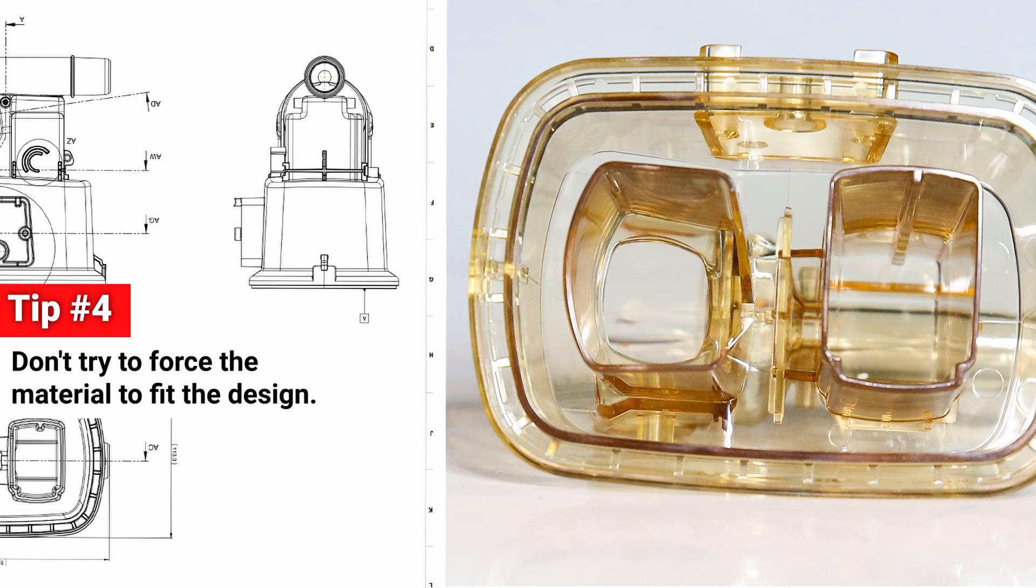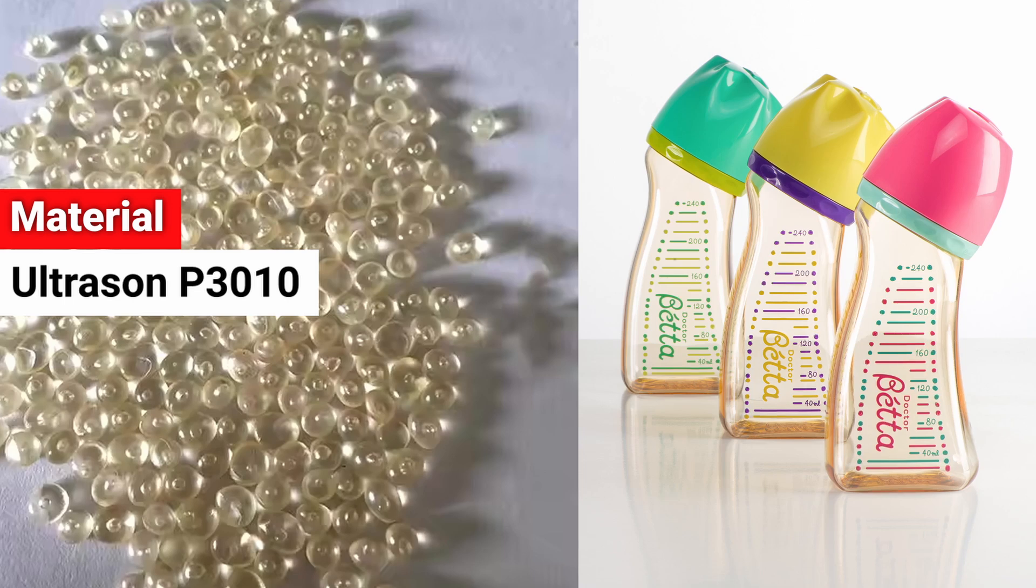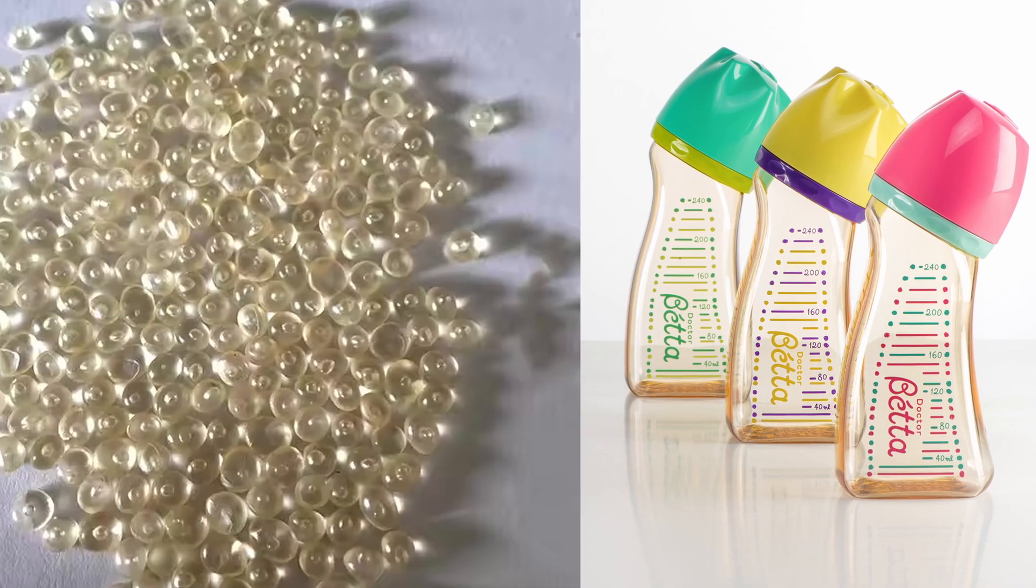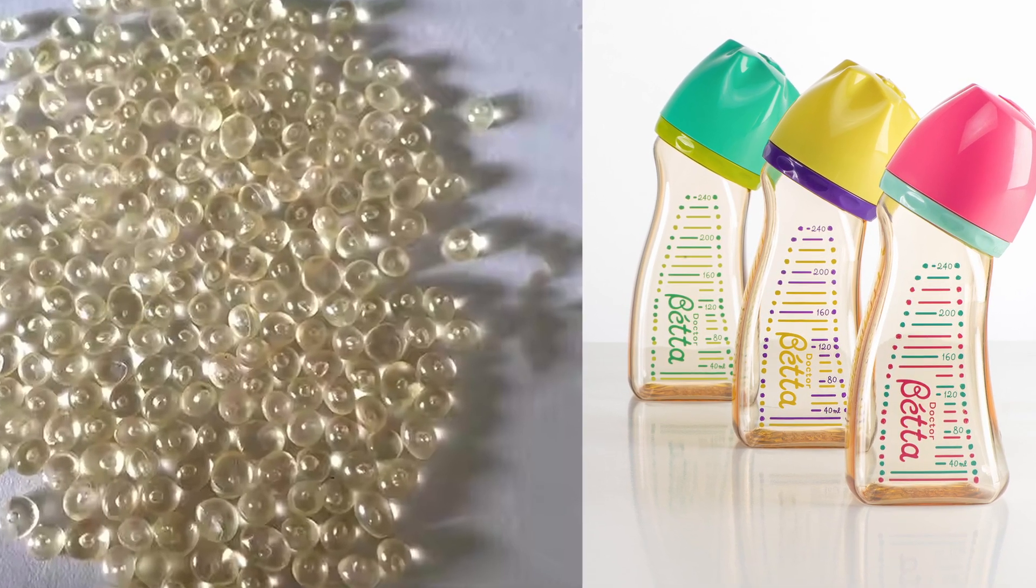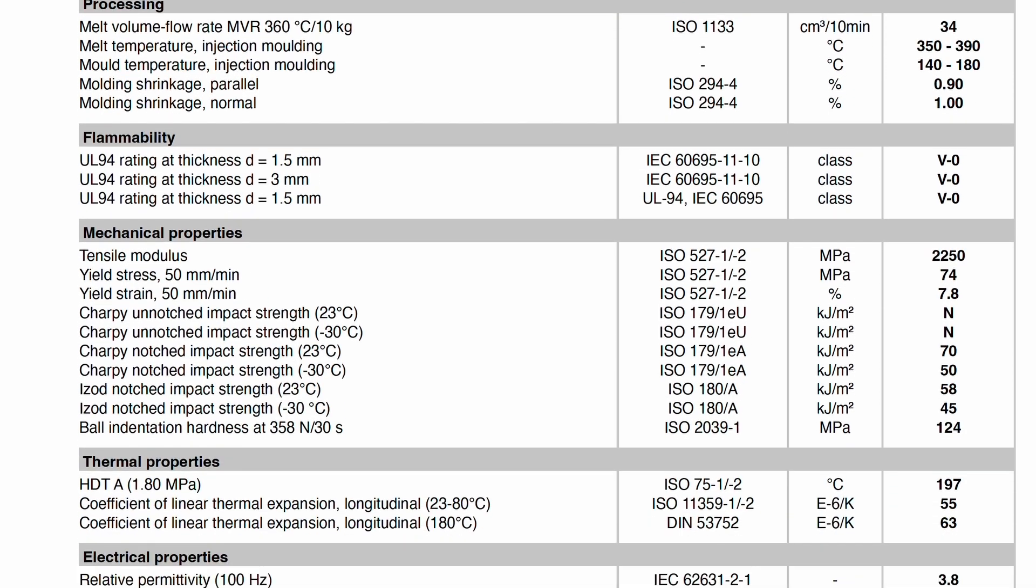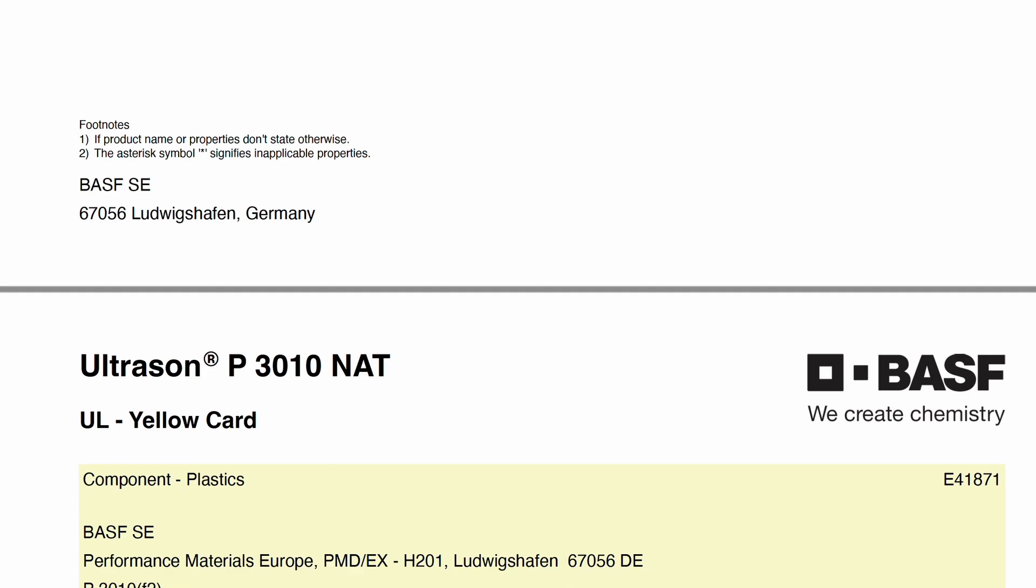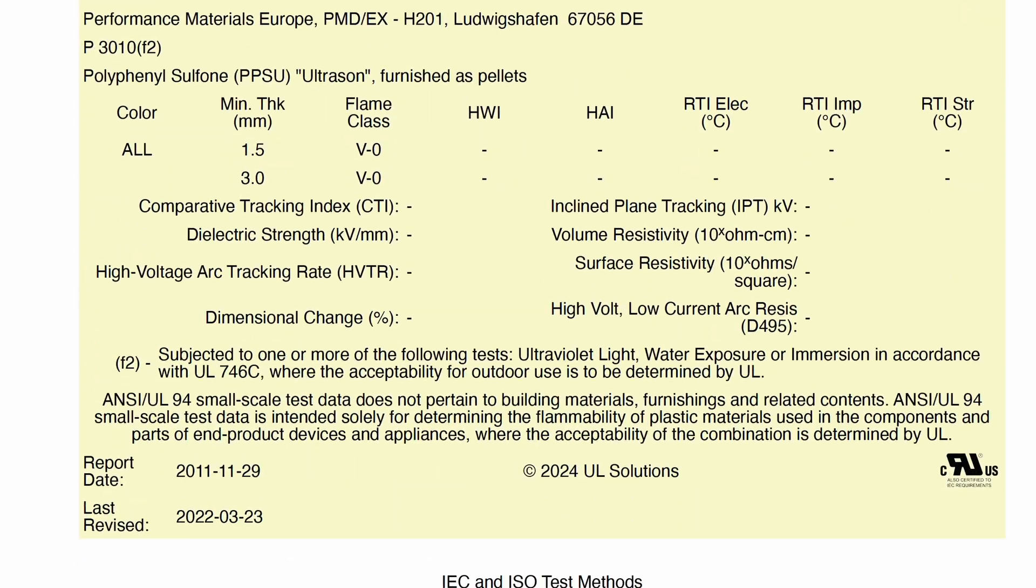In this case, the material was Ultrasound P3010, a chemically stable plastic that resists high heat steam sterilization. Knowing this helped us to then calculate the right melt flow rate, melt temperature, proper moisture content, and all the other parameters needed to establish consistency.